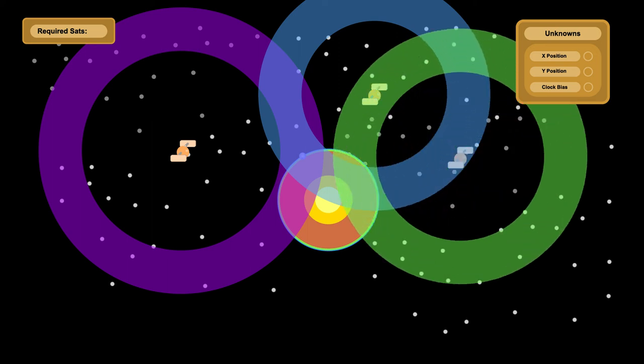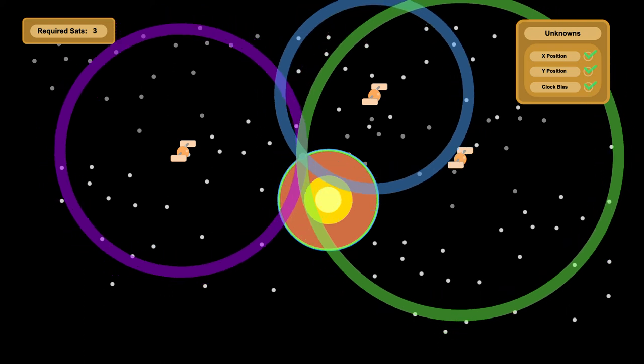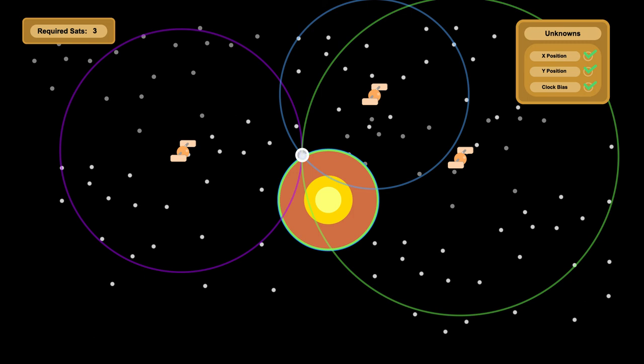So now, with the distance measurement of a third satellite, your phone can actually calculate your x position, your y position, and your clock bias, allowing you to know where you are on planet Earth, and how far you are from fast food.